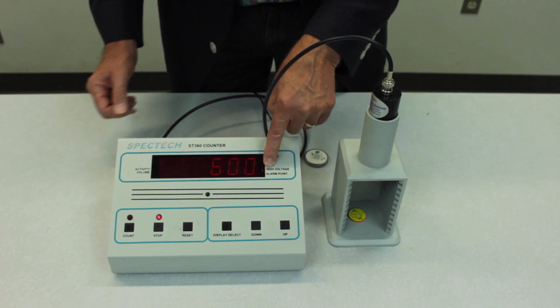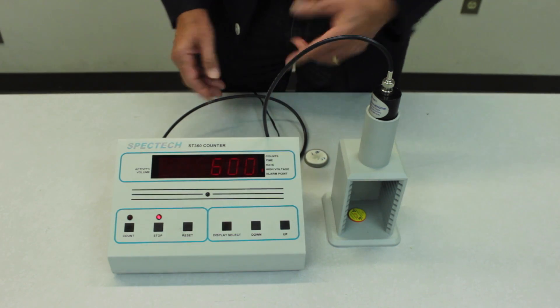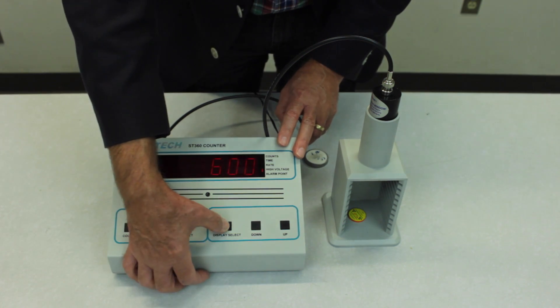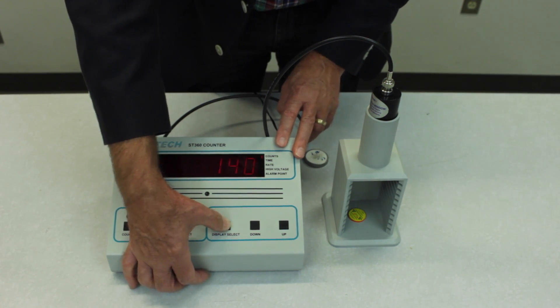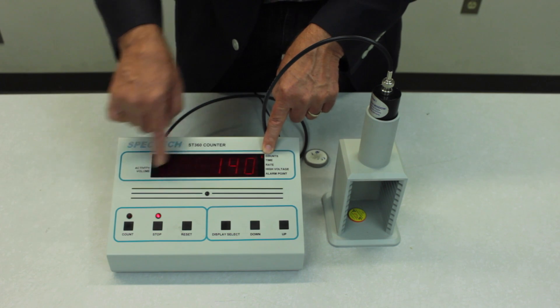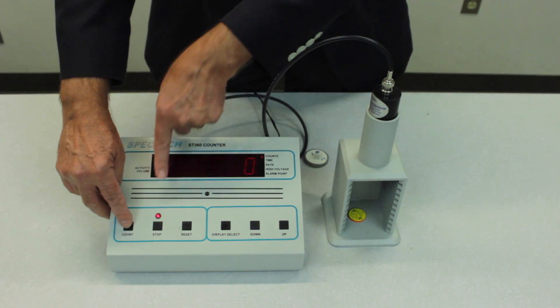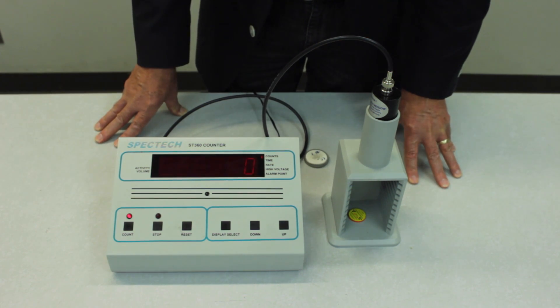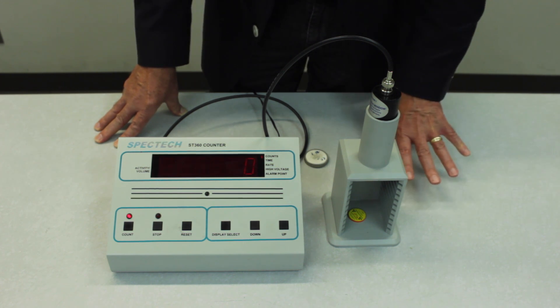Actually there. Six hundred may be below the threshold. So let's find out if that's the case. We'll go back to the count function and reset this to zero and press the count. And it's just sitting there not counting anything. So six hundred volts is probably below the threshold.